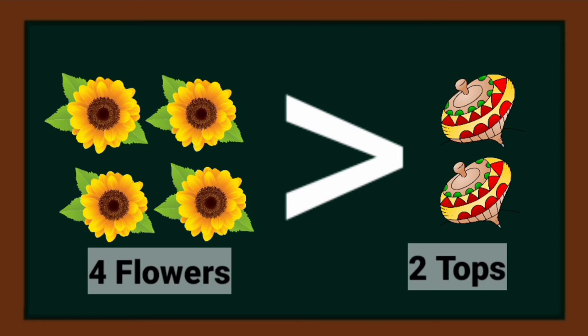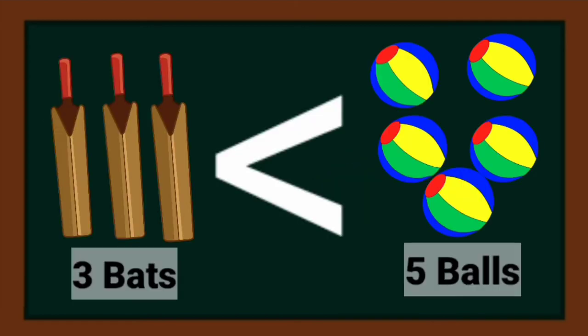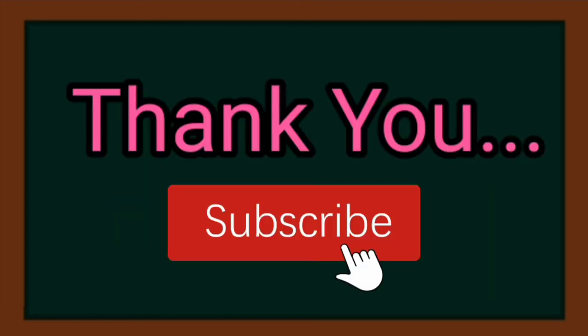Let's take another example. There are three bats and five balls. The number of bats is less than the number of balls, so we use this symbol.